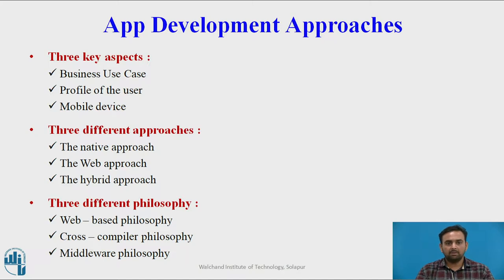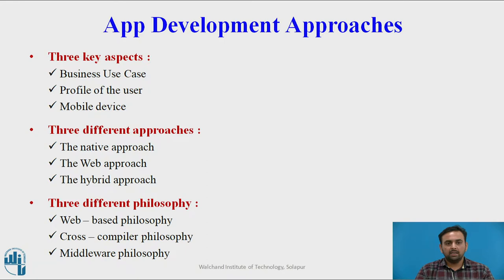Third one is the hybrid approach, in which both the native and web approaches are used. There are three different philosophies. First one is the web-based philosophy, in which the web is used for application development — web applications are used along with native wrappers, so the user gets the feel that it is installed on the native mobile platform. Second is the cross-compiler philosophy, in which the hybrid app is generated using web technologies such as HTML, CSS, and JavaScript. Third one is the middleware philosophy, in which the hybrid app is installed on a middleware server so that it can facilitate the consumer to interact with the enterprise server.